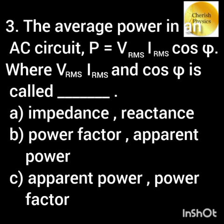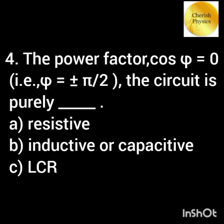The average power of an AC circuit is equal to Vrms into Irms cos phi, where Vrms, Irms, and cos phi is called — dash. The power factor cos phi equal to 0 — then the circuit is purely — dash.